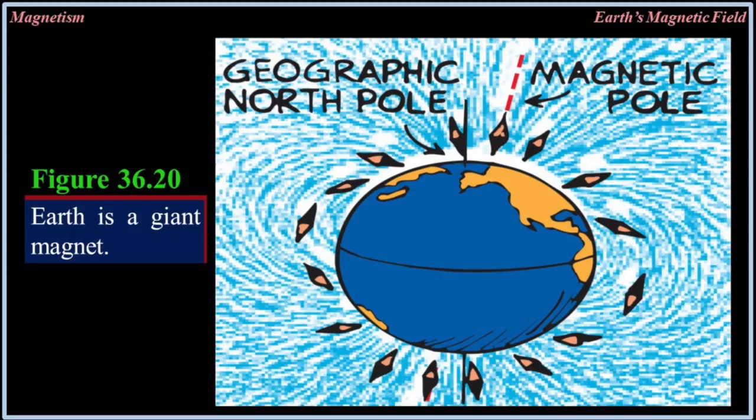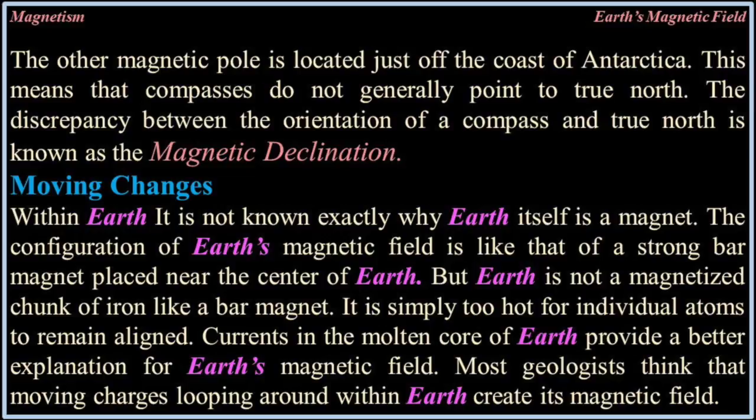The other magnetic pole is located just off the coast of Antarctica. This means that compasses do not generally point to true north. The discrepancy between the orientation of the compass and true north is known as the magnetic declination. It is not known exactly why Earth itself is a magnet.